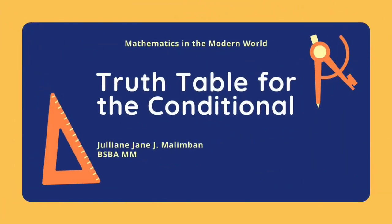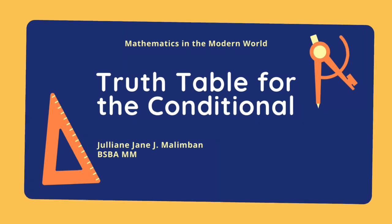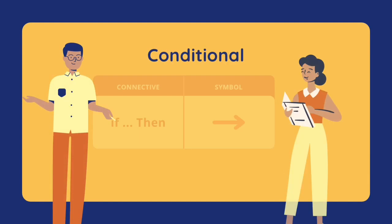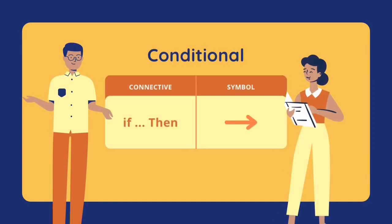Good day everyone! My name is Julianne Jane Malimban and I will talk about the truth table for the conditional. For the conditional, our connective is 'if and then' and our symbol is an arrow pointing to the right.